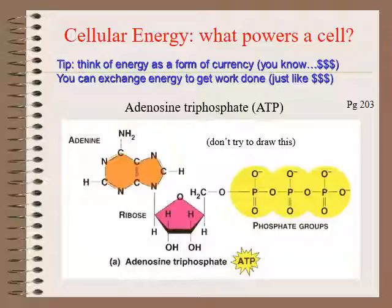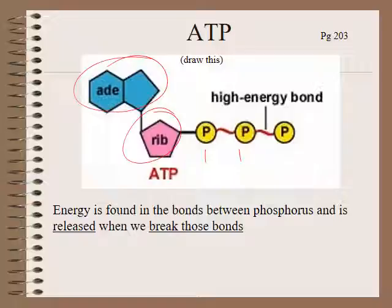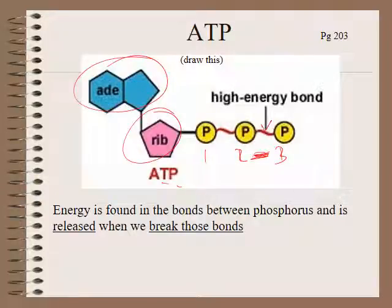Adenosine triphosphate is typically known as ATP. The key parts are the adenosine, the ribose, and the triphosphate — three phosphate groups. The way ATP loses energy — the way the energy gets spent — is by breaking the high-energy bond between the second and third phosphate groups. When we break that chemical bond, a lot of energy is released, and that energy can be used for all different types of things inside the cell.